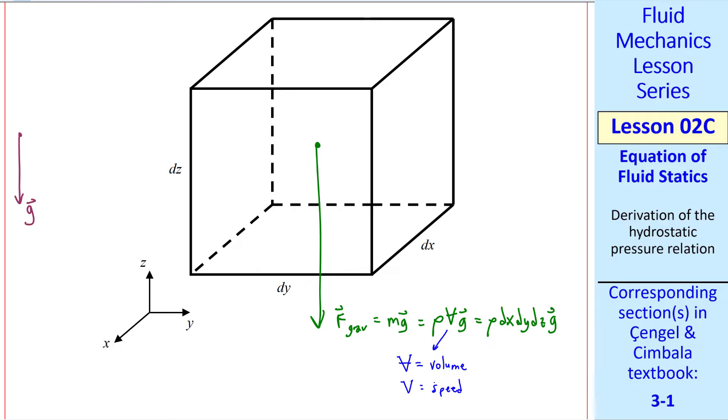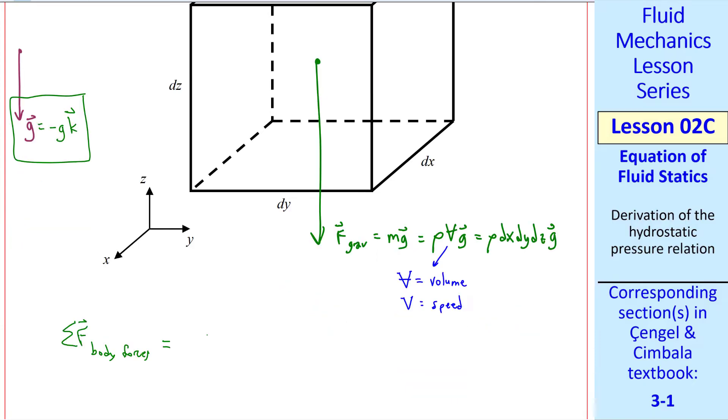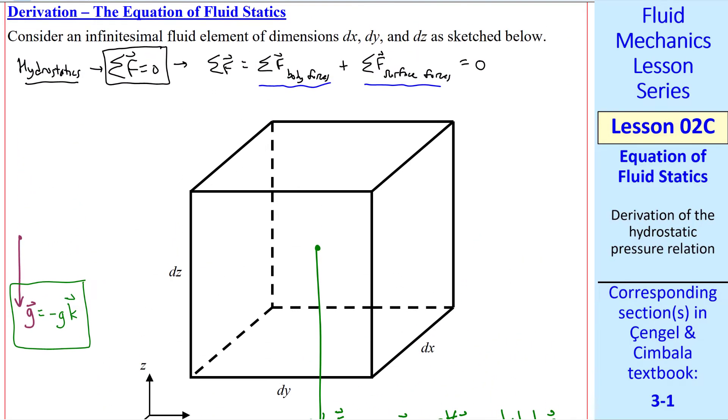Since g acts in the negative z direction, we can write g as negative g times k, where k is the unit vector in the z direction. So the sum of all the body forces is negative ρg dx dy dz times k. So we have the first one of these completed.